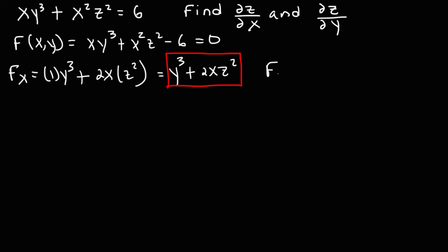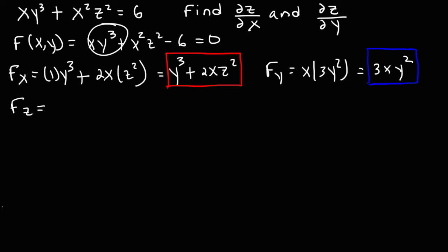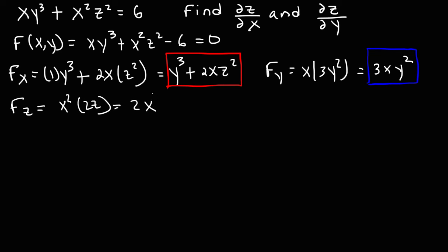Now let's find the partial derivative with respect to y. We treat x and z as constants. The derivative of y cubed is 3y squared, and the x squared z squared term has no y variable so that's 0. So f sub y is 3xy squared. Now let's find the partial derivative with respect to z. The xy cubed term has no z variable, so that's 0. It's going to be x squared times the derivative of z squared, which is 2z, giving us f sub z equals 2x squared z.